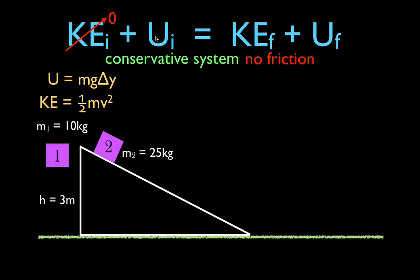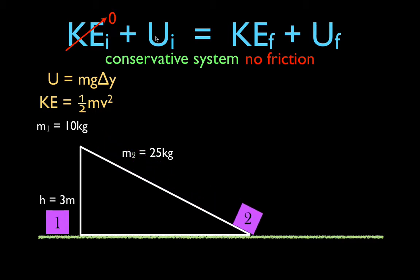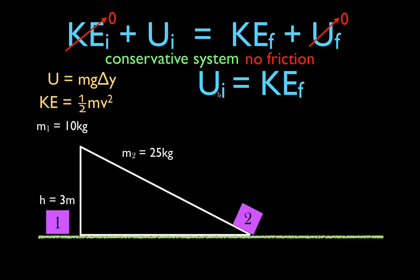We release object one — it falls to the ground. We release object two — it slides down the ramp. Just before they hit the ground surface, they have lost all of their height, and therefore lost all of their potential energy. So the final potential energy for both objects is zero. As they fell, they gained velocity and kinetic energy. For both objects, their initial potential energy equals their final kinetic energy — that potential was converted into kinetic energy.